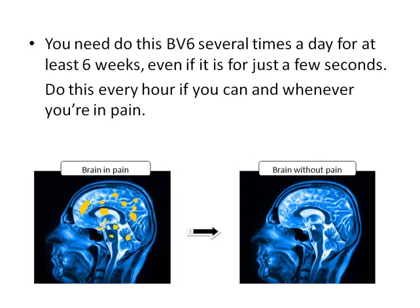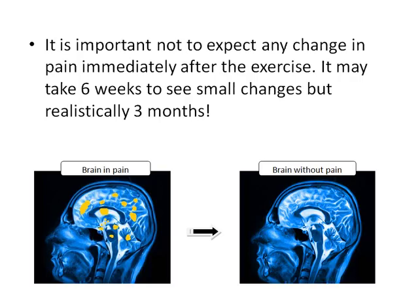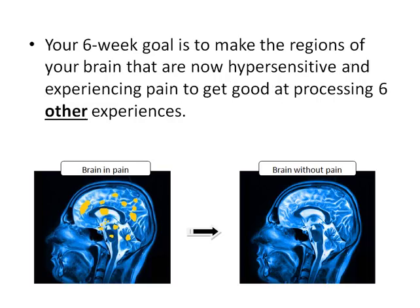You need to do this BV6 several times a day for at least six weeks, even if it's for just a few seconds. Do this every hour if you can, and whenever you're in pain. It's important not to expect any change in pain immediately after the exercise. It may take six weeks to see small changes, but realistically, three months. Your six week goal is to make the regions of your brain that are now hypersensitive and experiencing pain get good at processing six other experiences.